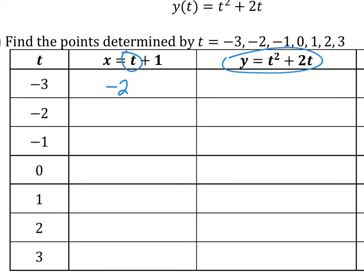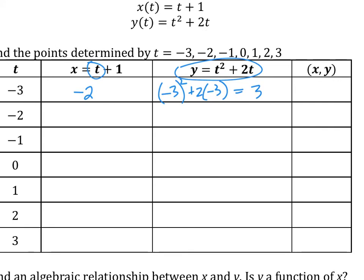We can do the same thing with the y equation. Wherever I have a t, I plug in negative 3. So negative 3 squared plus 2 times negative 3, that gives us 3. So that's actually going to give me a coordinate: negative 2, 3. At t equals negative 3 seconds, this particle or object is at the position negative 2, 3 in space.